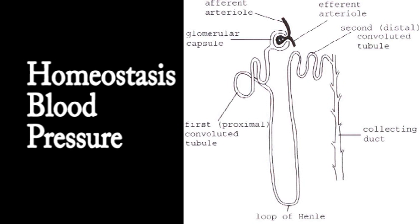In the normal situation, the kidneys detect blood pressure: when it rises they produce less renin; when it falls they produce more renin. Renin activates the angiotensin-aldosterone system, increasing blood pressure. When blood pressure rises sufficiently, the kidneys produce less renin, allowing blood pressure to fall. That gives us a lot to think about, so we'll finish this podcast at this stage.